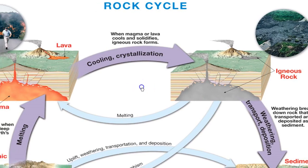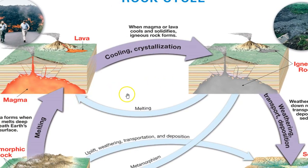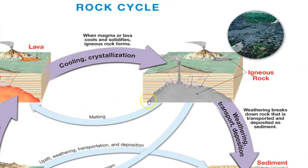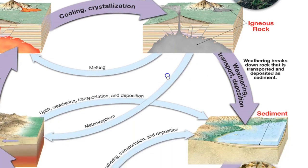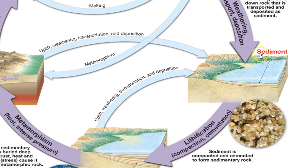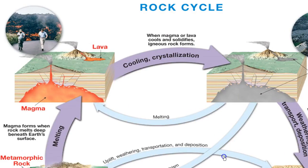Igneous rocks come from magma or lava. Once you take those igneous rocks and expose them at the surface, they can be weathered and broken down. That weathering is going to make sediment, which is then transported and deposited, and then the next process is lithification. So we've got two processes so far: lithification, the process of making sedimentary rock, and crystallization, the process of making igneous rock.